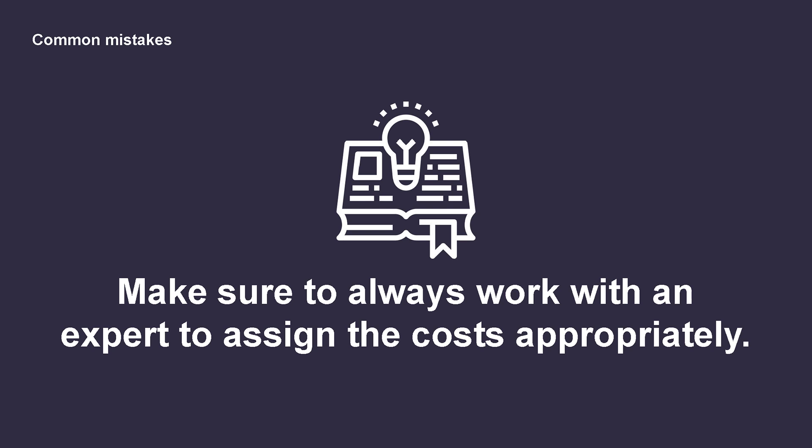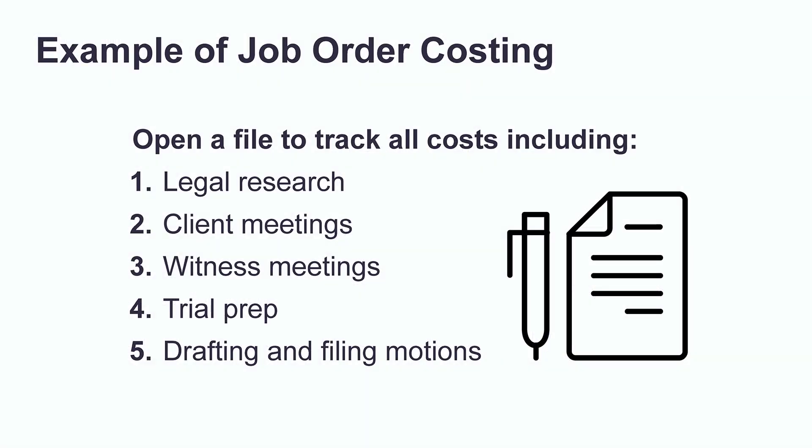Let's see an example of job order costing for an attorney. Since attorneys work with different clients on unique accounts, job order costing is the most appropriate system used to track how much time and resources were used for each client. Here is an example: the law offices of Reggie Alexander have been retained to provide legal defense for Mr. Simpson.